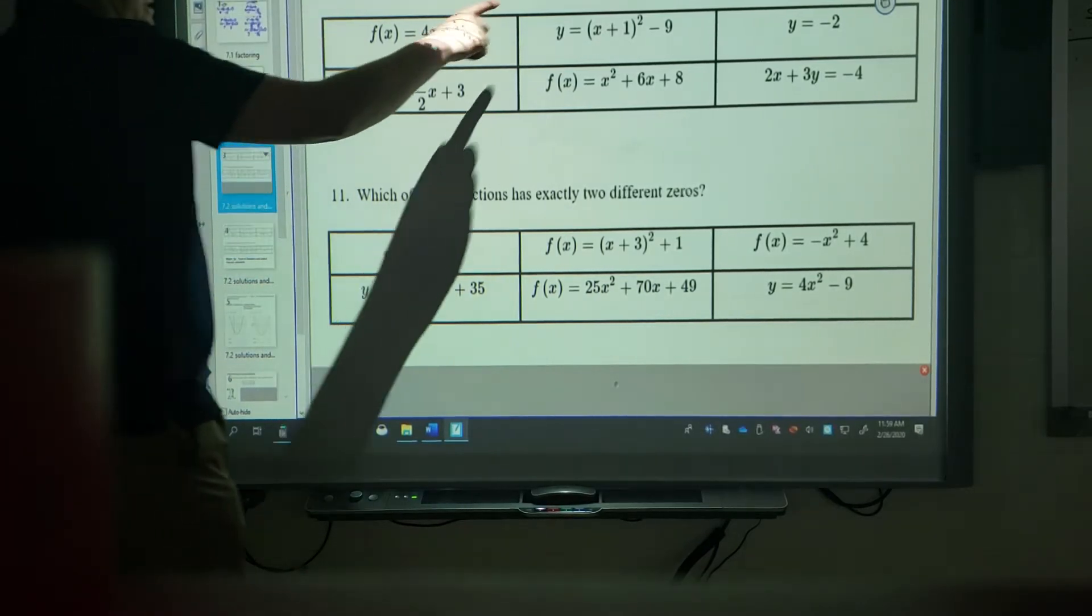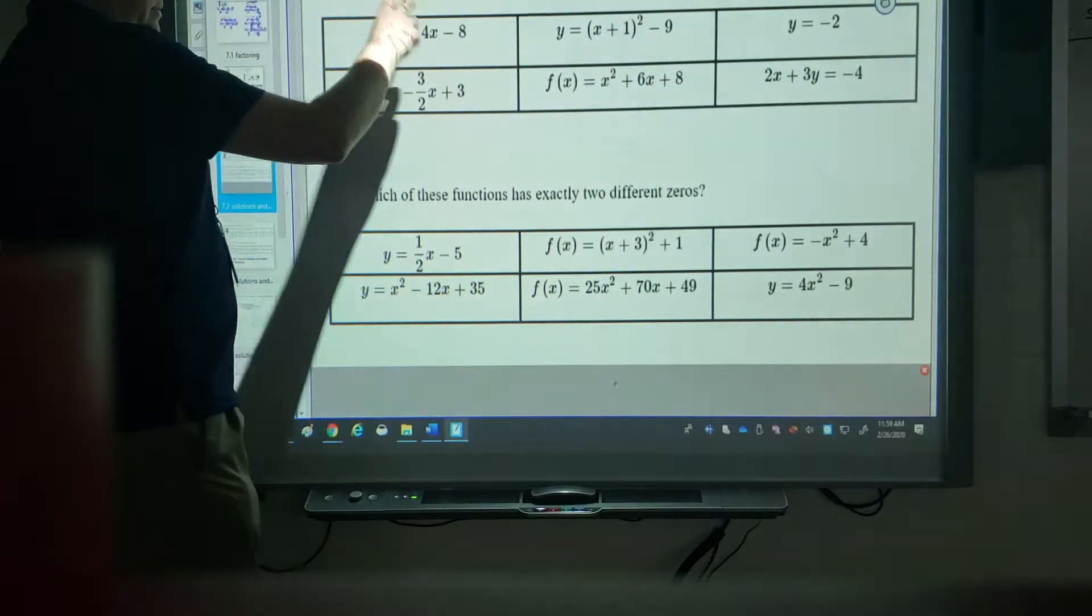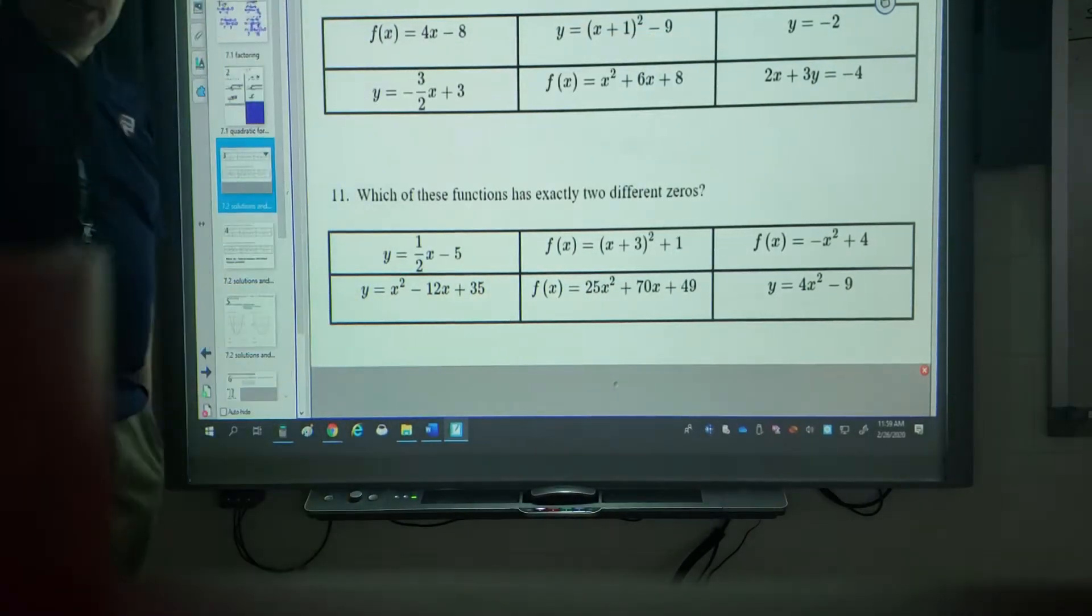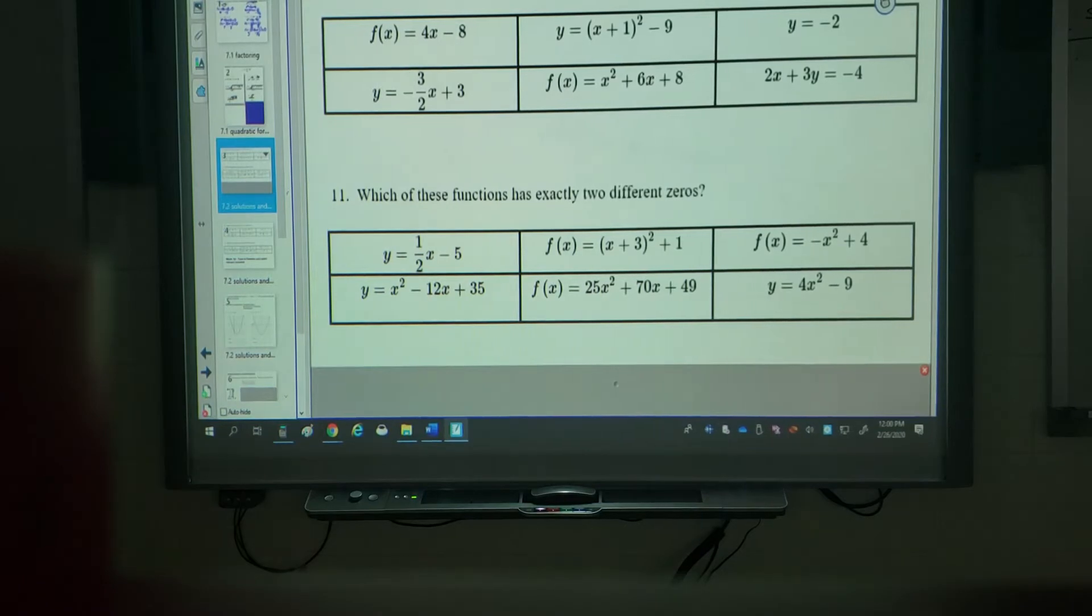So identify each function that has an x-intercept of negative 2. When they're written as equations it's not quite so easy to tell, so what you want to do for all these questions is just go straight to Desmos.